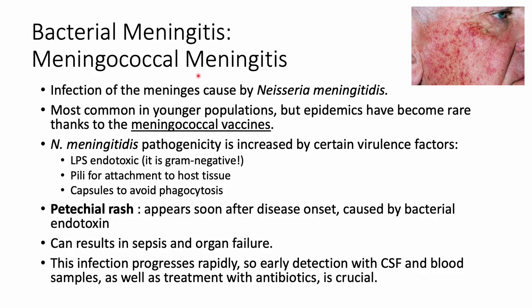Meningococcal meningitis is caused by Neisseria meningitidis. It used to be much more common in younger populations but has become more rare thanks to the meningococcal vaccine. Its pathogenicity is increased by virulence factors: as a gram-negative bacterium, it has LPS endotoxin with lipid A in its outer membrane, special pili for attachment to host tissues, and a capsule to avoid phagocytosis.